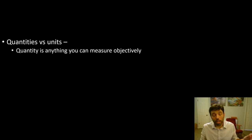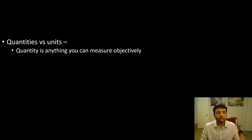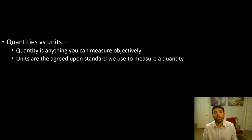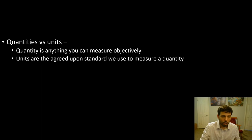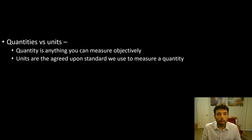Objectively means not opinion. I measure the length of something to be 20 meters, and you measure 20 — we agree, that's objective. Some things that are not quantities are like color. You can't really have 'how much blue is it?' It's just blue. Now, the units are the agreed-upon standard that we measure in. So if you're driving and I say, how fast are you going? Your speedometer might say 25 miles per hour.